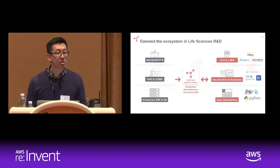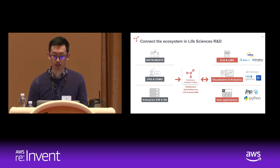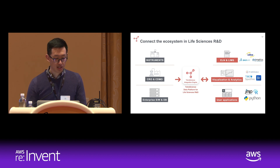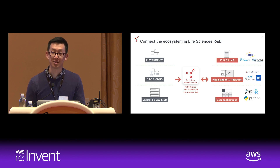As a recap, we want to build a data highway system connecting the different data silos — instruments, CROs, and enterprise softwares. Data flows through TetraScience, being cleaned up, standardized, and centralized, then flows to the right data consumers: your ELN, your LIMS, your visualization tools, and the applications you'll be developing to further understand the data. I want to thank our early customers who trusted us with their data to build out this data integration platform, and also Amazon for their helpful advice during the process.